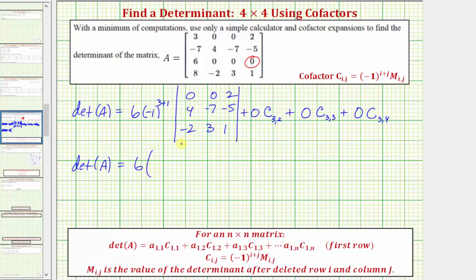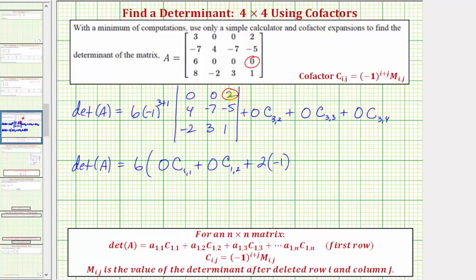We'll have six times the value of this determinant. Using row one, the first element is zero, so zero times C sub one comma one, plus the next element in row one is also zero, so plus zero times C sub one comma two. Finally, the last element in row one is two, so we'd have plus two times the cofactor — negative one raised to the power of one plus three — times the minor, which is the two by two determinant formed by eliminating row one and column three, leaving elements four, negative seven, negative two, three.